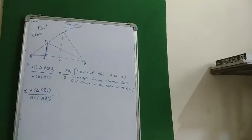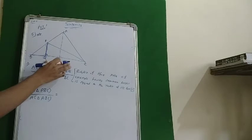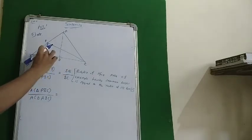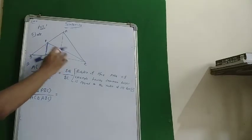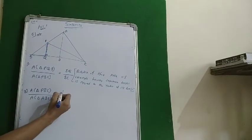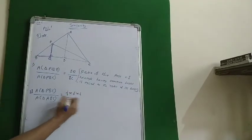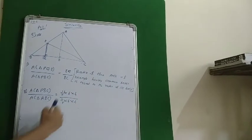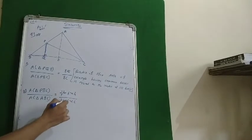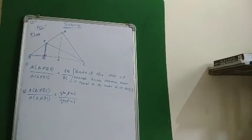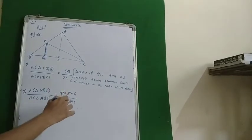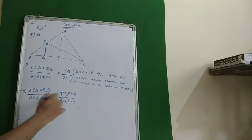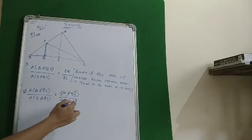We observe that in both triangles PBC and ABC, BC stands as a common base. For a triangle having a common base, the ratio of areas equals the ratio of their heights, because in the formula half times base times height, the half and the base both get cancelled, leaving only the ratio of heights.